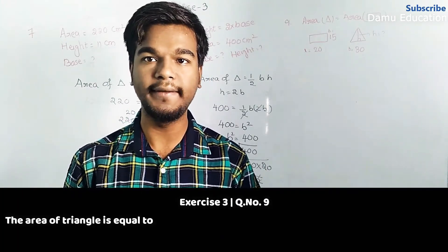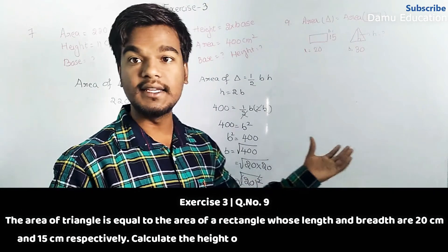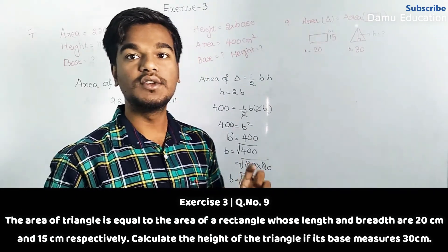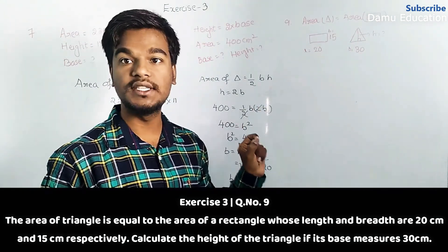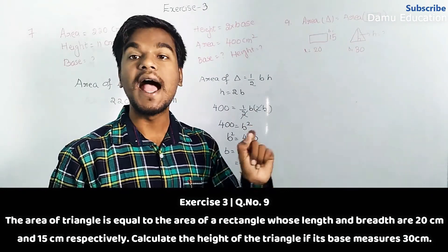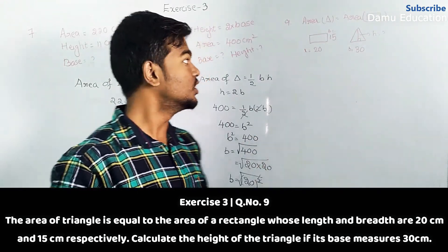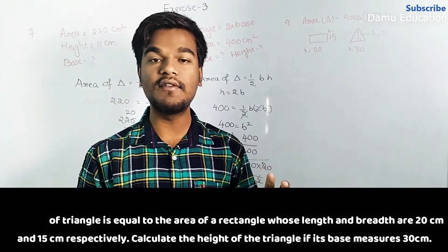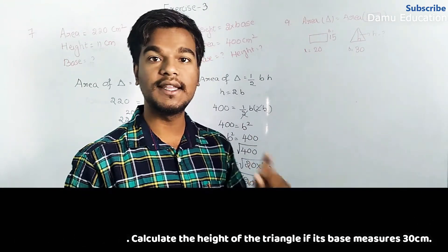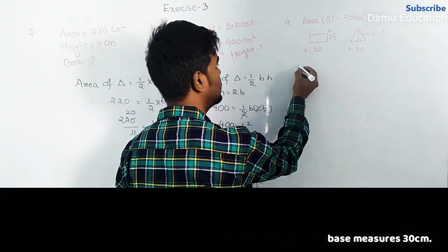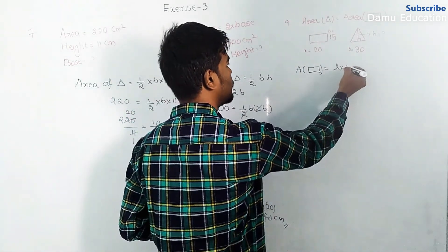Height is 40 centimeters because height is double the base: 2 into 20 equals 40 centimeters. Next, question nine: the area of the triangle equals the area of the rectangle. The rectangle has length 20 centimeters and breadth 15 centimeters, and the triangle has base 30 centimeters. We need to find the height of the triangle.